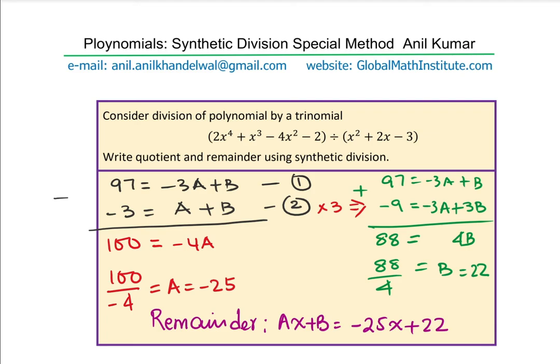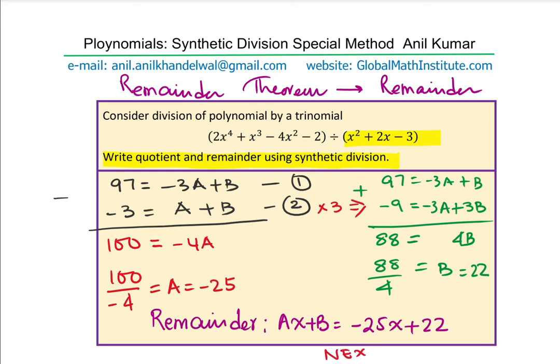So in this case, we successfully used the remainder theorem to find the remainder when the divisor is quadratic in nature. In the next part of the video, we will see how to find the quotient and the remainder using synthetic division. That discussion will be continued.